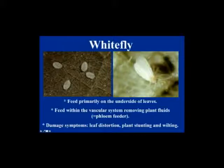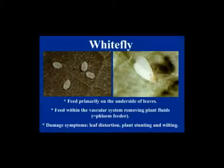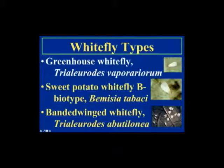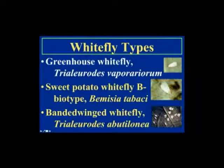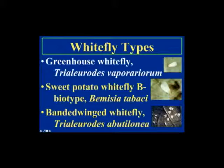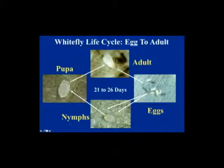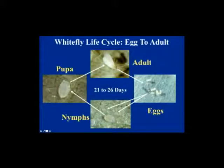Whitefly: the nymphs and the adult feed on phloem contents. They are primarily found on leaf undersides and cause leaf distortion, plant stunting, and wilting. The major whitefly type you'll encounter is the sweet potato whitefly — the major pest of poinsettia. The banded-winged whitefly comes in during fall but does not develop well on poinsettia. You may also see some greenhouse whitefly, but the majority you'll deal with are sweet potato whiteflies. Under poinsettia growing conditions, it takes about 21 to 26 days to go from egg to adult.